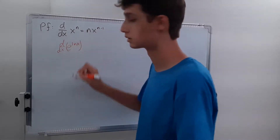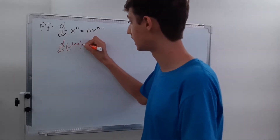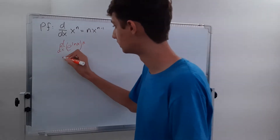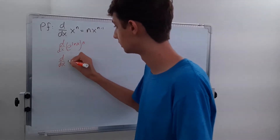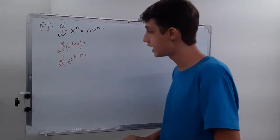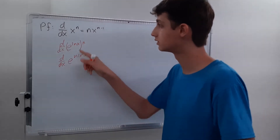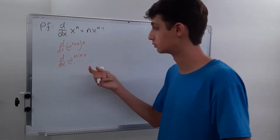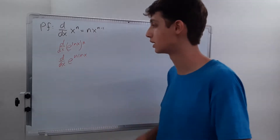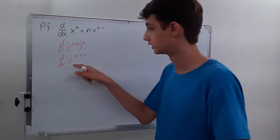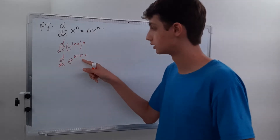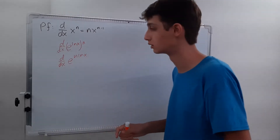We're going to put that in parentheses and multiply by n, moving the n power inside. So this is the derivative of e to the n·ln x. We can't use the power rule here — we have to use the chain rule and the product rule.